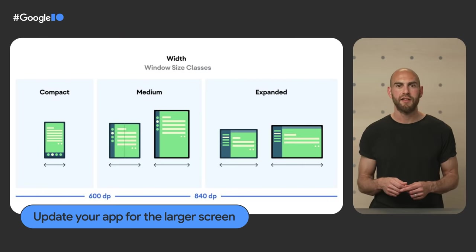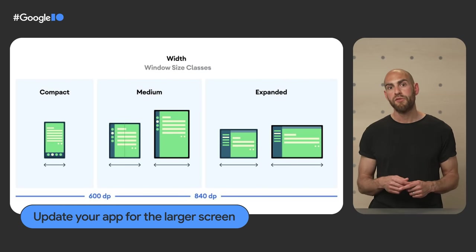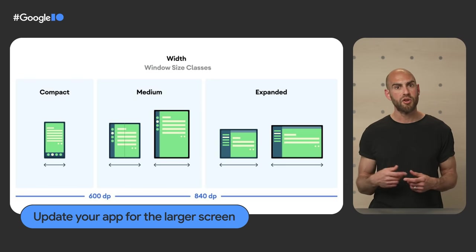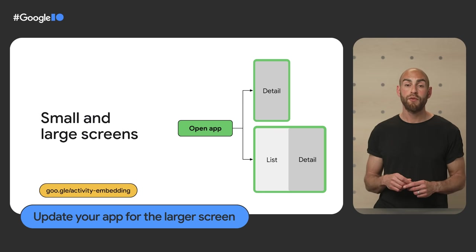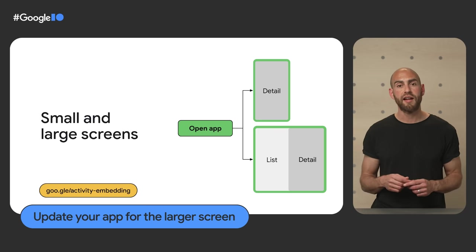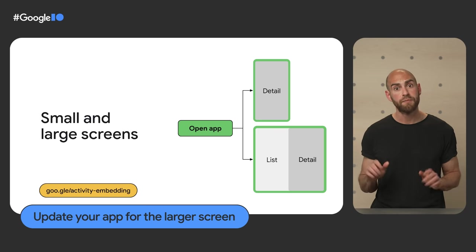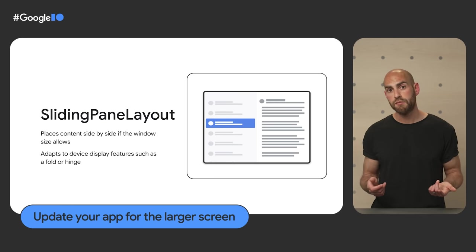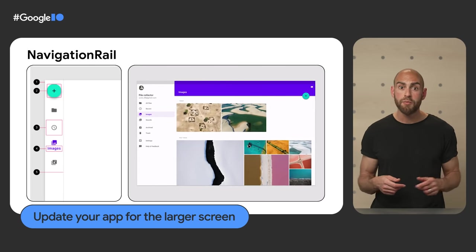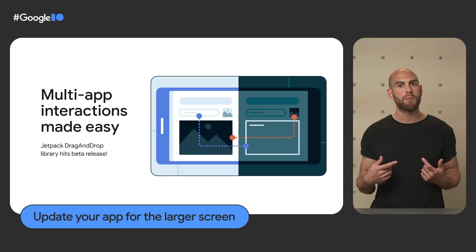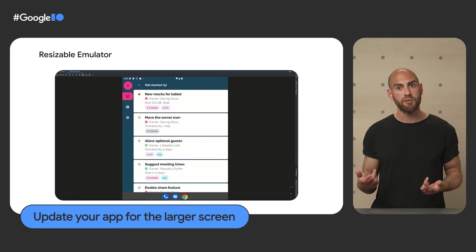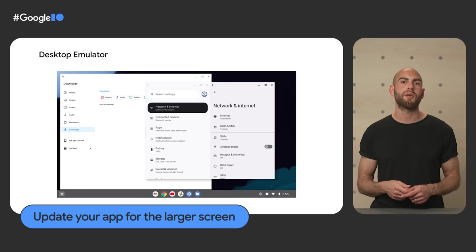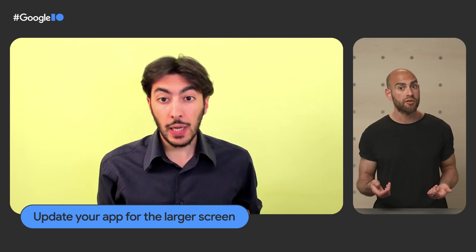Jetpack Window Manager 1.1 provides window size class APIs to adapt your UI based on available space. To build adaptive UIs without a full rewrite, several APIs are available: use activity embedding to place activities side by side, sliding pane layout to combine fragments, nav rail for adaptive navigation UI, and the new Jetpack DropHelper utility class for drag and drop. To test your app, use the resizable emulator and the new Android desktop emulator. Check out 'Update Your App for the Larger Screen' for more.